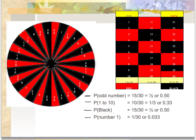The probability that I'm going to end up with a number from 1 to 10, since there's 10 numbers, it's 10 out of 30, one third. The probability of black is also one half. And the probability of getting the number 1, or any individual number, would be 1 out of 30. And this is if they're all the exact same area.